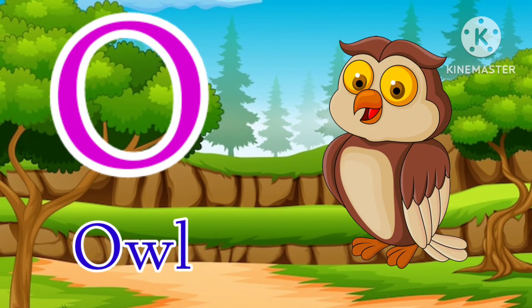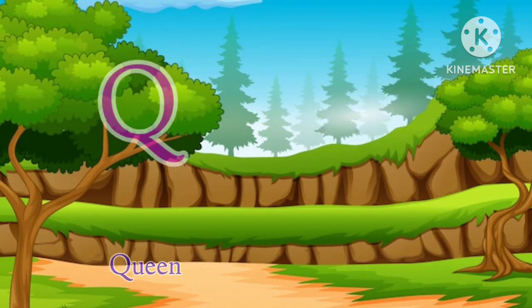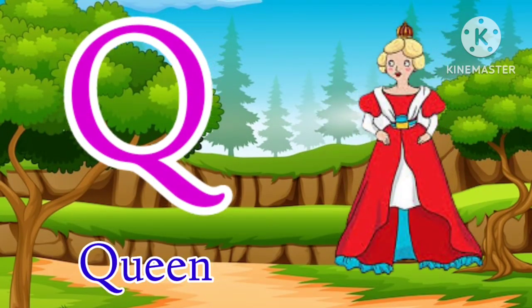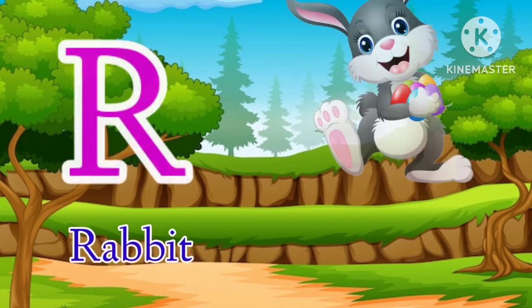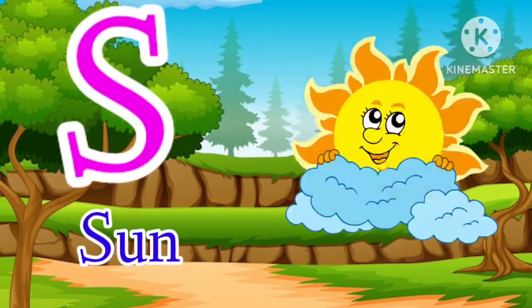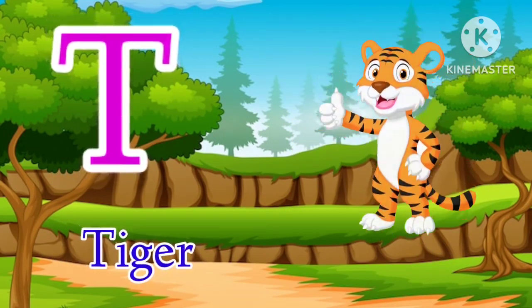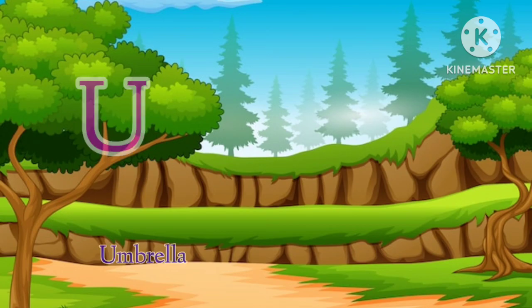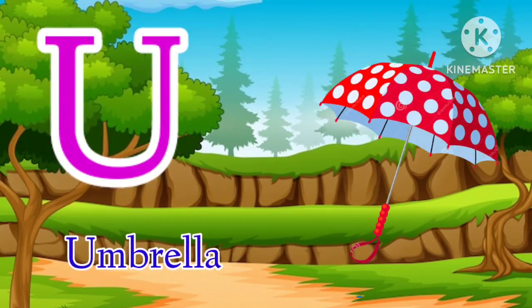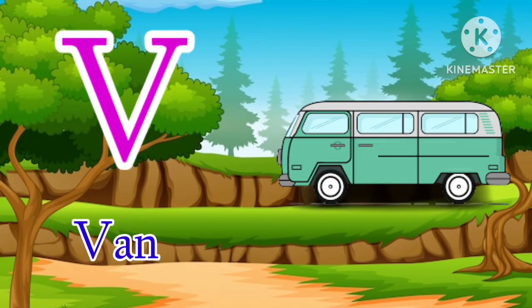O for owl, P for parrot, Q for queen, R for rabbit, S for sun, T for tiger, U for umbrella, V for van.